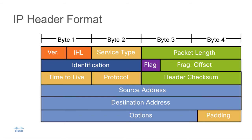The next field is the time-to-live field, or TTL. The TTL is used to make sure that a packet does not move through the network endlessly. If there's a routing loop, a packet could be sent back and forth over and over again, and without a TTL field, the packet would never be discarded. The TTL field is a value that decrements at each Layer 3 hop — it's initially set to a number, sometimes 30, and at each hop it decrements by 1. Once the TTL value reaches 0, the packet is discarded.